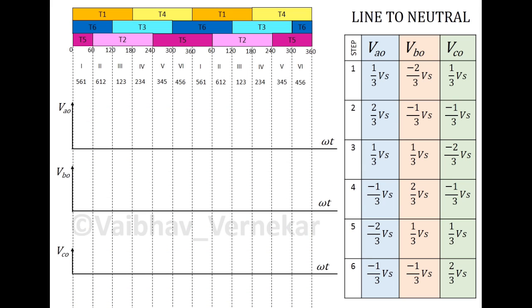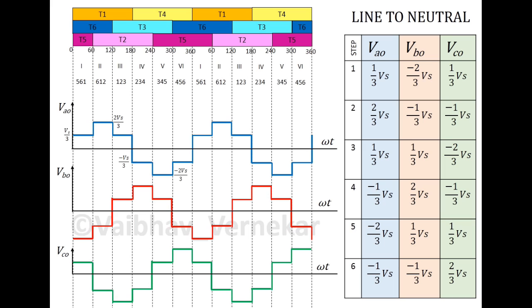The values to be plotted in order to obtain line to neutral voltages are shown in the table. The three values in step 1 are plotted followed by step 2 till step 6. The sequence will repeat for another cycle. After all the values are plotted, join the lines to complete the line to neutral voltage plot.